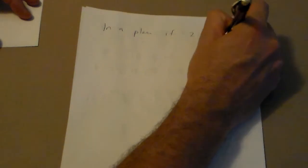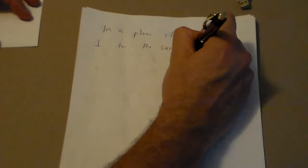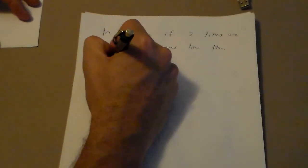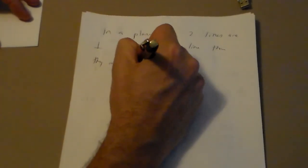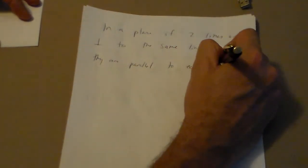Now, there's one other one that we're going to look at. And it says in a plane, if two lines are perpendicular to the same line, then they are parallel to each other.